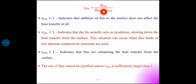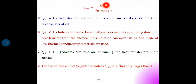If epsilon equals 1, it means q-fin equals q-without-fin — the fin is added but heat transfer is the same, meaning the fin acts as an insulator. If epsilon is greater than 1, it indicates that fins are enhancing heat transfer from the surface. Effectiveness greater than 1 means q-with-fin is greater than q-without-fin — the fin is added and heat transfer is enhanced. That is the favorable or preferable condition.